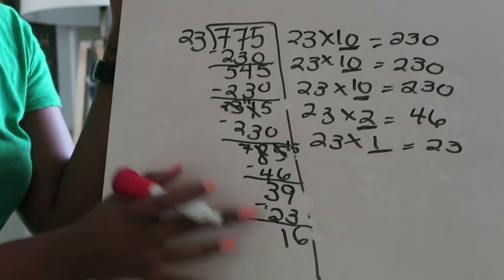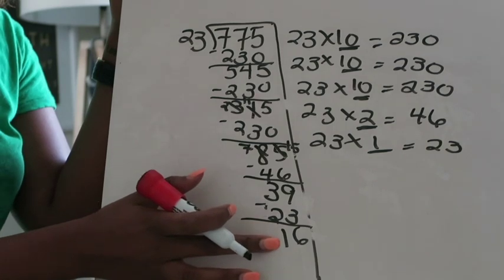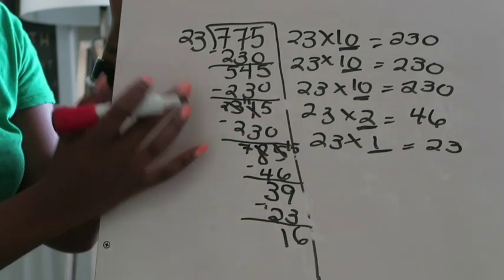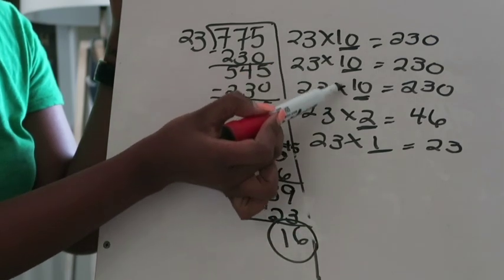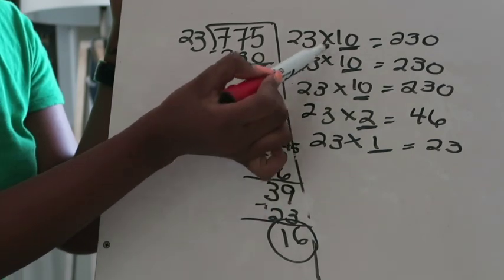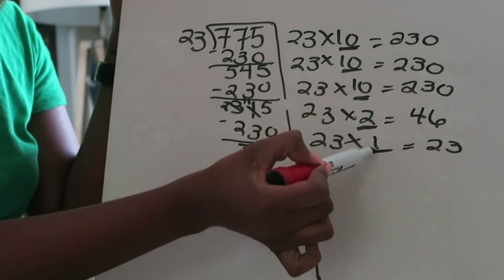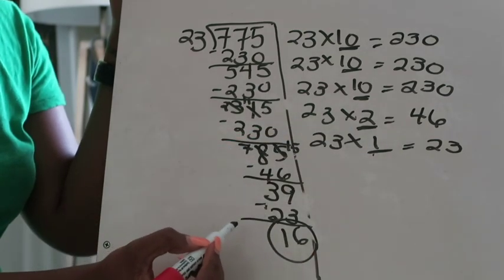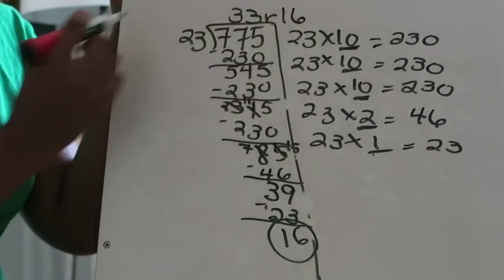This is a remainder because 23 cannot be multiplied by anything and equal 16, it's too big of a number. Now I'm going to circle my remainder and look at all these numbers that I underlined and add them. So this is 10, 20, 30, 32, 33. That tells me my answer is 33 remainder 16.